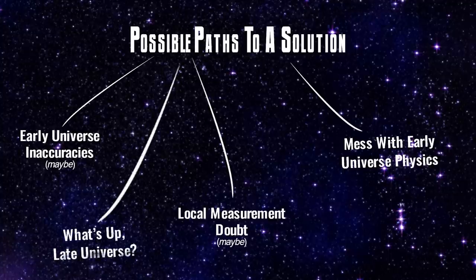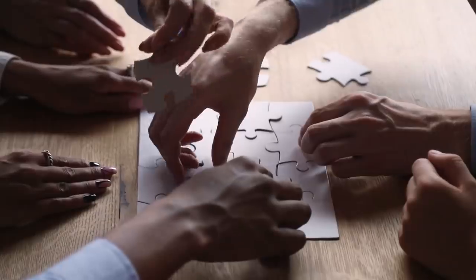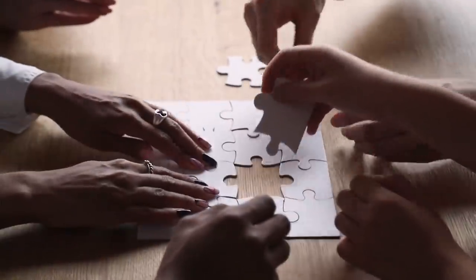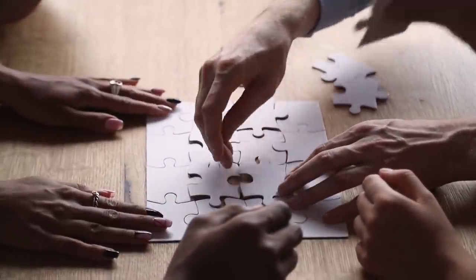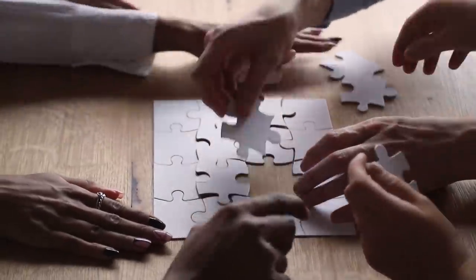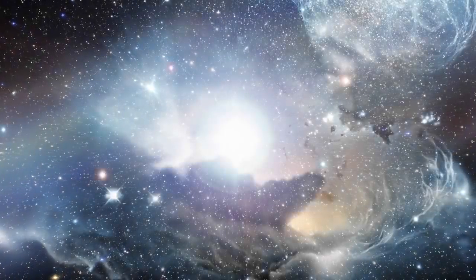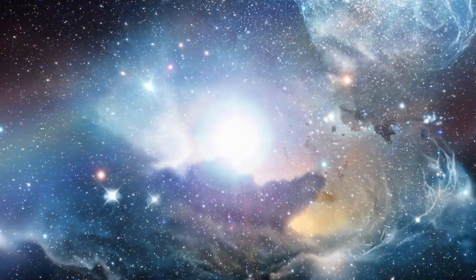Maybe there's something happening in the late universe. Maybe dark energy really ramps up at the last minute, or starts interacting with dark matter and evolving. Maybe the assumption that Lambda in Lambda CDM is fixed is wrong. But when you start messing around, you can't find one solution that agrees with all late-universe observations — fix one thing, and you break others.